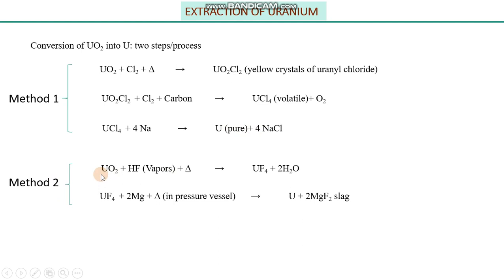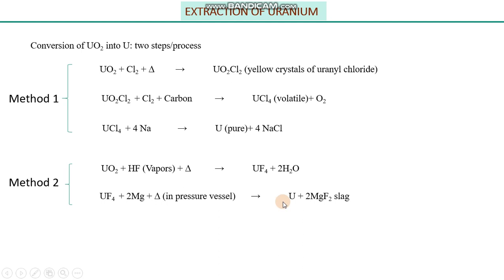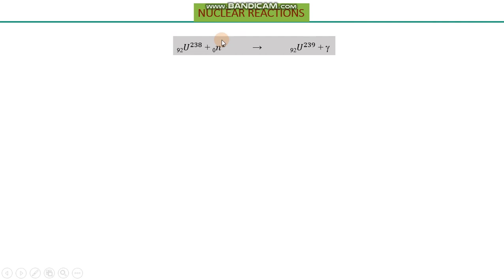In the second method, uranium oxide was treated with HF at high temperature to get uranium fluoride, which was then treated with magnesium as a reducing agent at high temperature in a closed pressure vessel to get pure uranium plus magnesium fluoride in the form of slag. Since uranium is heavier, it settles at the bottom while magnesium fluoride slag collects at the top and can easily be skimmed off to obtain pure uranium.